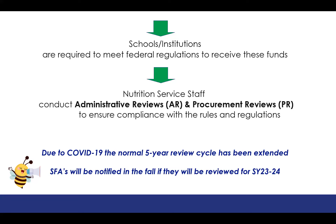Normally these reviews are conducted in a five-year cycle, but due to COVID, we did not conduct reviews for two years — we offered a different program than the school meals program for those two years. The five-year review cycle has been extended. Reviews were conducted last year, and we will be entering year three of the cycle for school year 23-24. The number and who will be reviewed for school year 23-24 has not yet been determined. But be assured, if you will be having these reviews — the ARs, administrative reviews, and a PR procurement review — you will be notified in the fall.